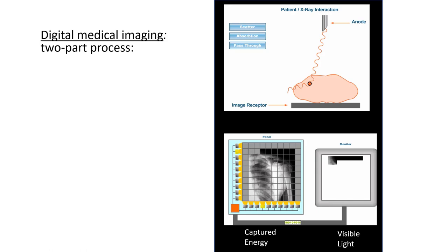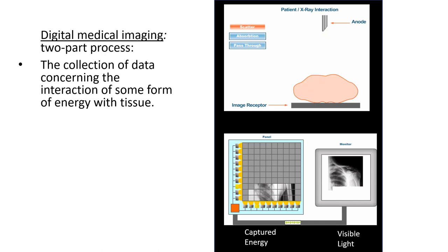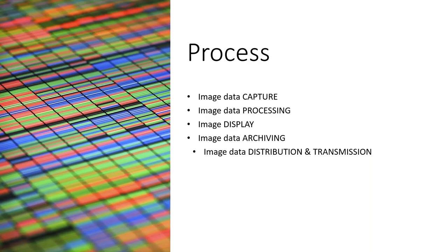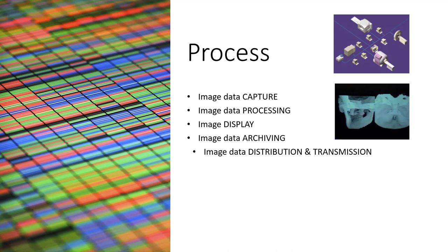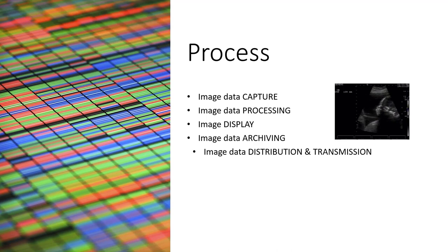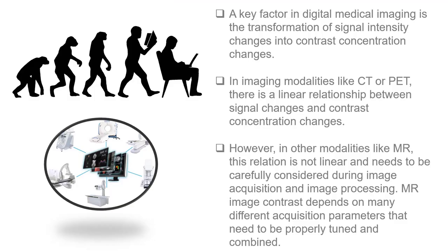Digital imaging is a two-part process: the collection of data concerning the interaction of some form of energy with tissue, and the transformation of these data into an image or set of images using specific computational tools. This process consists of image data capture, image data processing, image display, image data archiving or storage, and image data distribution and transmission.